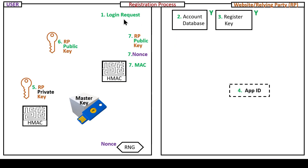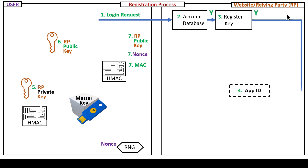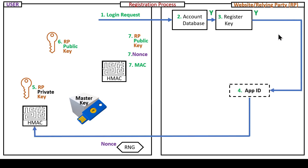When you start the registration process, you log into an account database. The account database says yes, you're in the system. You select you want to register a key through the security settings for the particular relying party or service provider. Once you say you want to register a key, it sends the app ID to the hardware security key.